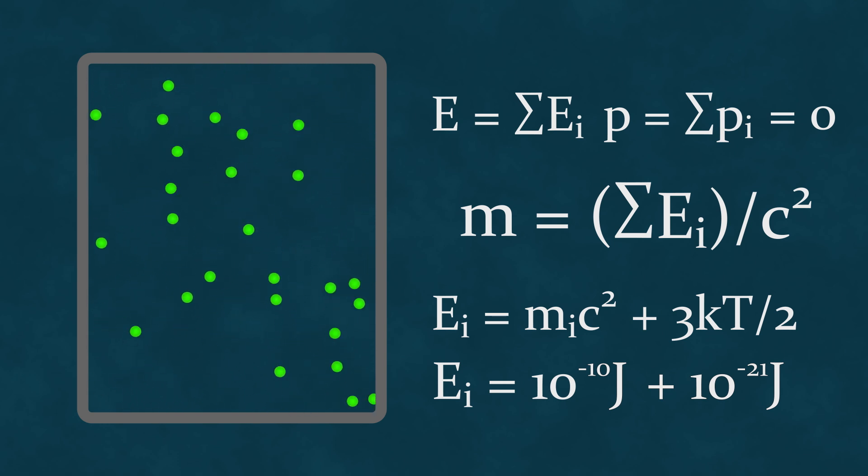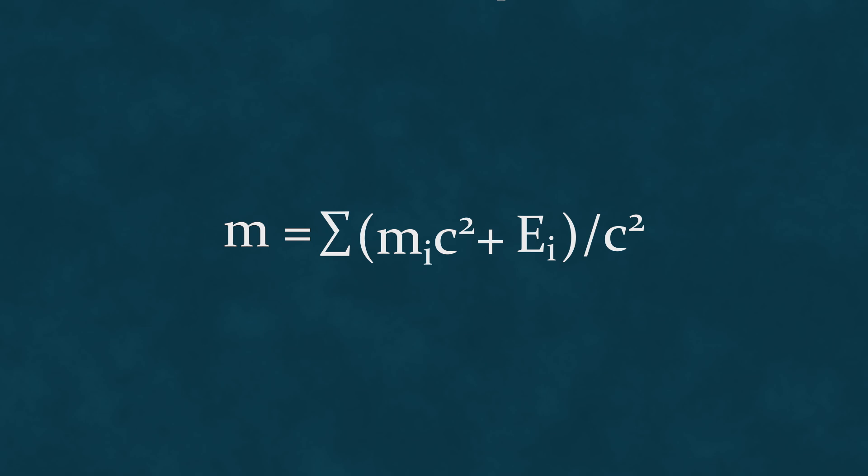Nonetheless, it is essential to understand that mass in relativistic mechanics is no longer an additive quantity. That is, the mass of a system consisting of multiple bodies is generally not equal to the sum of the masses of these bodies. In cases where the total momentum of these bodies is zero, we can use the familiar formula E equals MC squared to calculate this mass. Interestingly, if we look at our formula for the mass of a composite body, we find that it can have mass even if the particles composing it are massless.